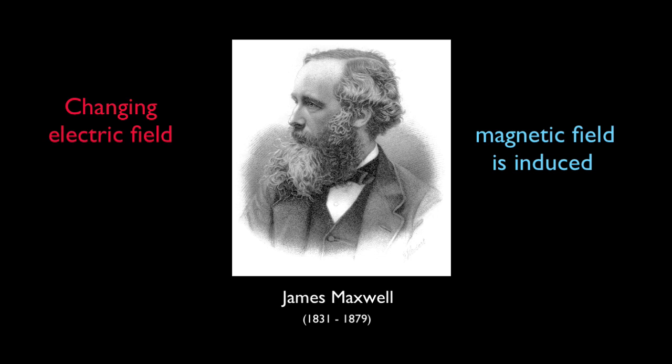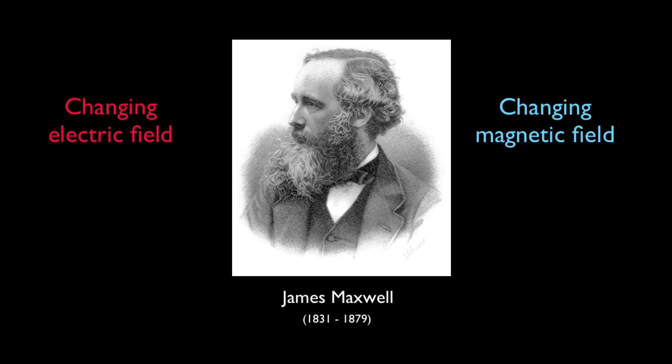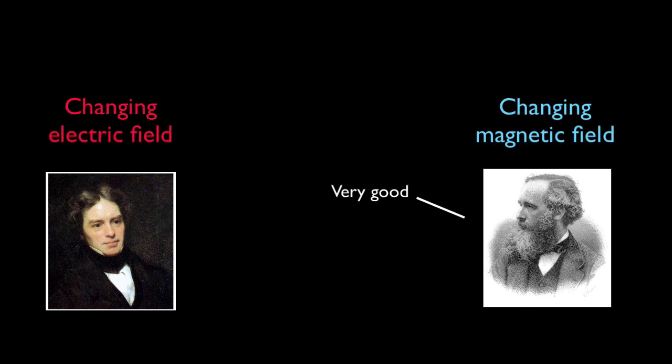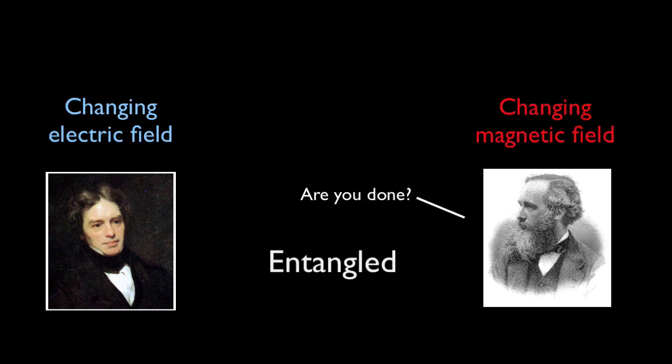A changing electric field generates a changing magnetic field, which in turn creates a corresponding change in the electric field, which generates a change in the magnetic field, and so on. Each field generating the other, like two people always trying to get the last word in a conversation. The electric and magnetic fields, they're entangled.